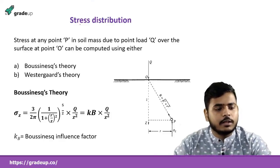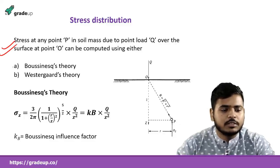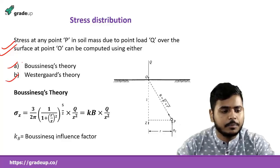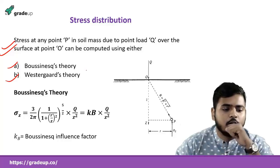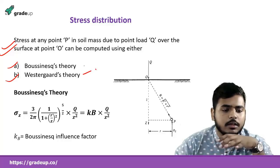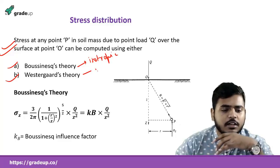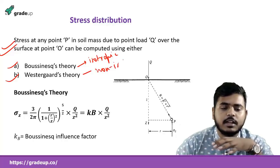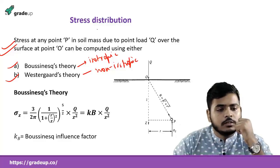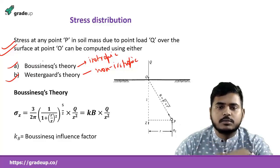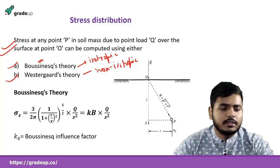Stress Distribution in Soils. There are two theories in this case. The first is given by Boussinesq and the second is the Westergaard theory. Boussinesq is more on the conservative side — it is for isotropic conditions — while Westergaard is generally for non-isotropic, meaning properties are different in different directions. Practically, Boussinesq theory is more commonly used to find the stress value at a point.